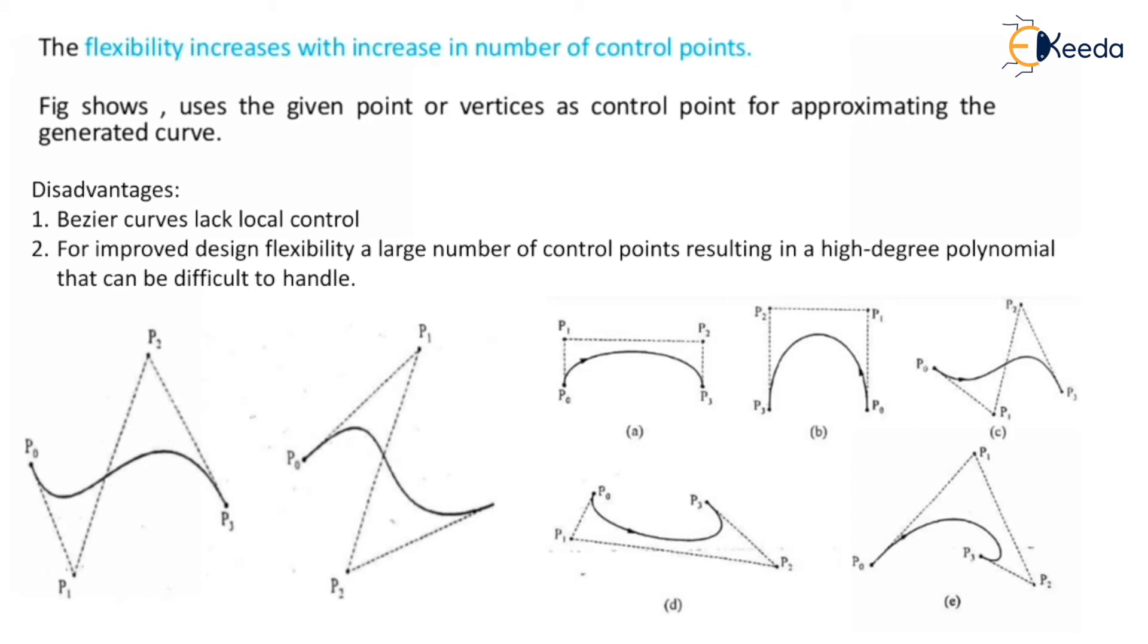So if you increase the control points, degree of polynomial will also increase and it is difficult to control. These are some examples. If you observe, we can shift the P2 point or P1 point downward. So the shape of the curve changes in the first figure. If we move P2 point downward, again the shape is a little bit changed. There are a, b, c, d, e - there are different changes there.